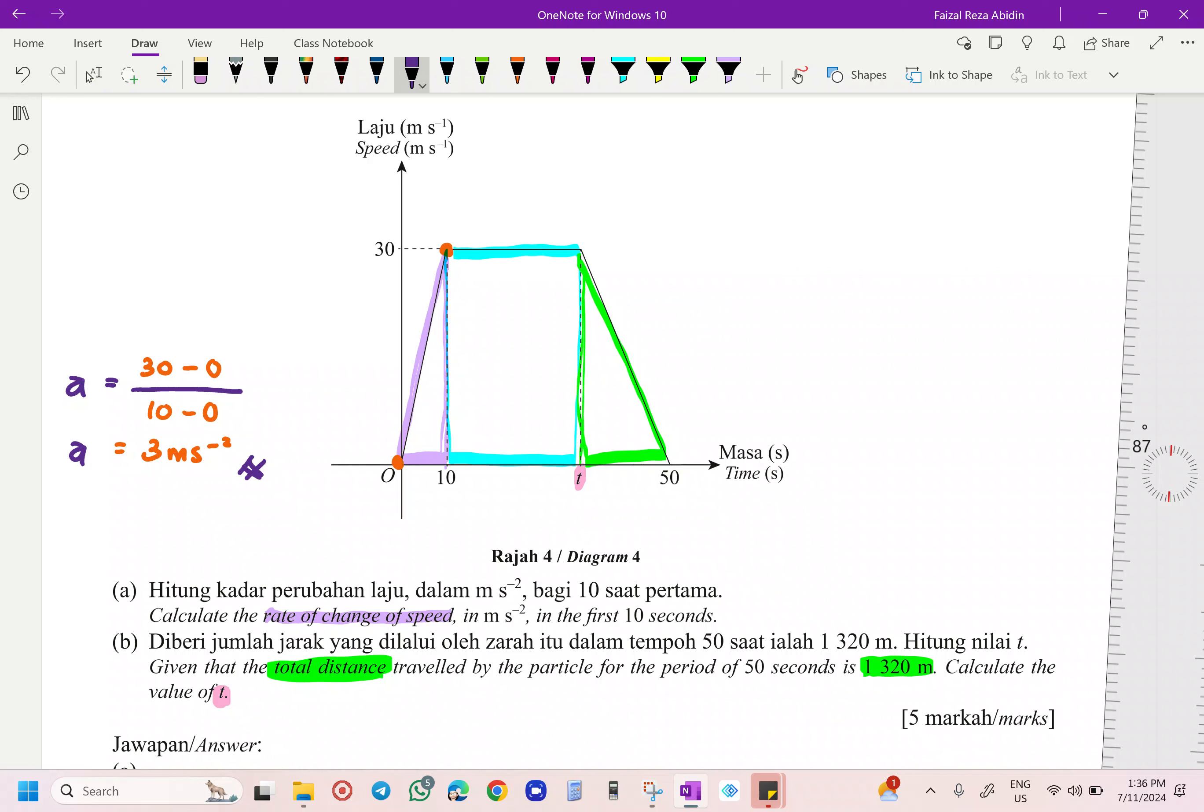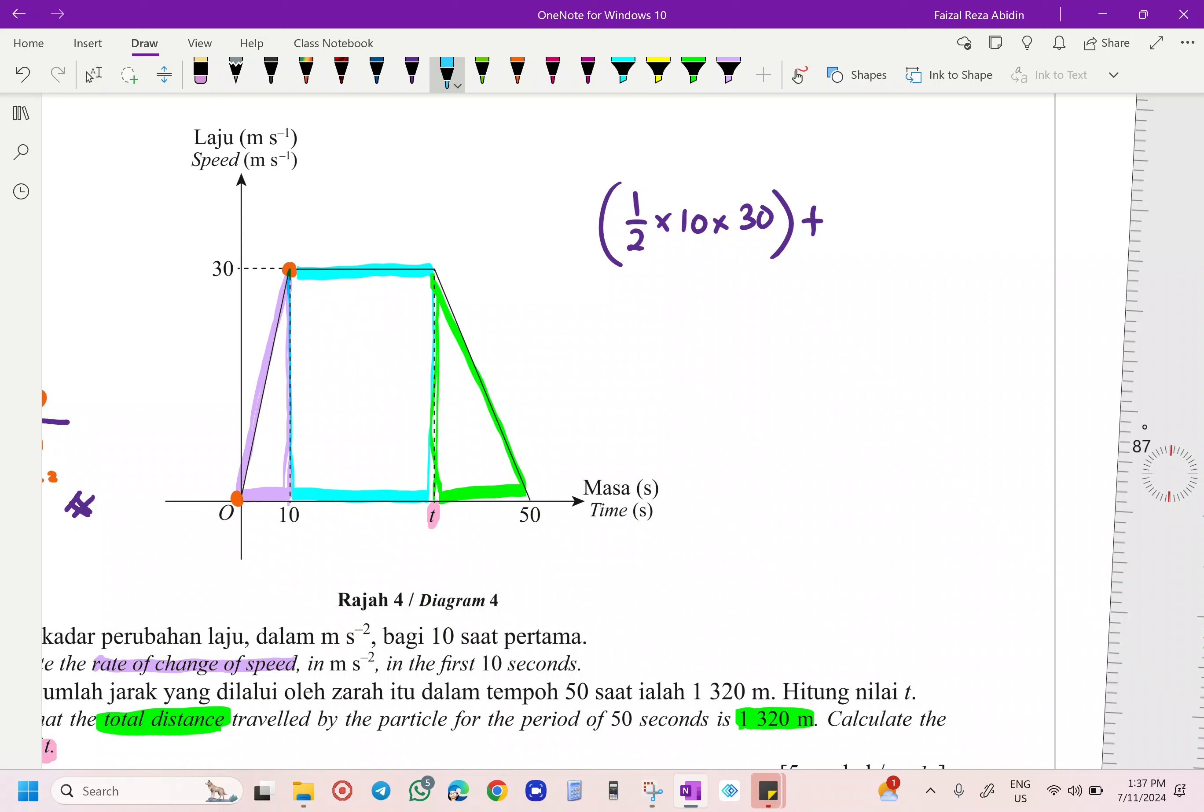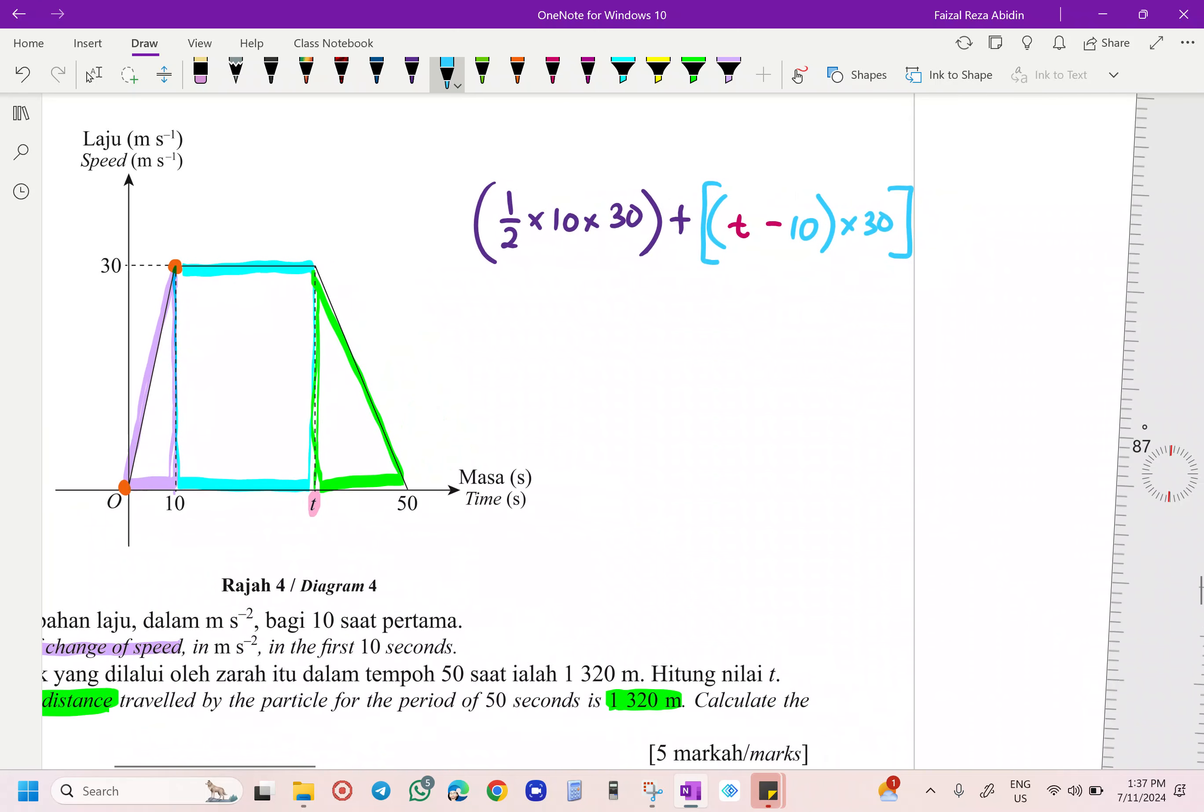Okay, total area is going to be our total distance there. You are going to get the total over here is 1 over 2 times base 10 times, I will hide that, the T for our first triangle there. Plus, next, for your rectangle there, I am going to get T minus 10, then you are going to times 30.